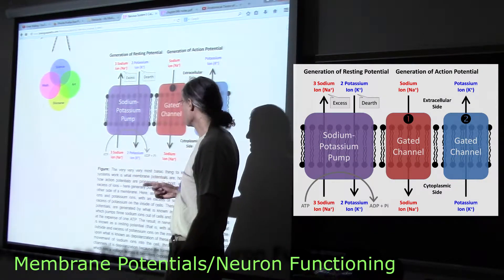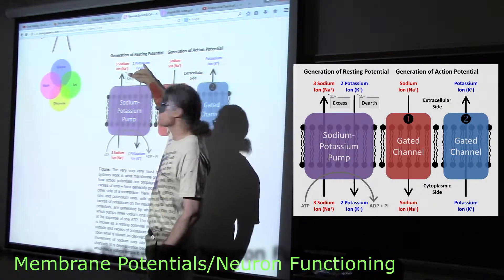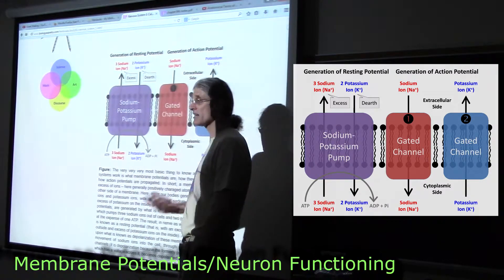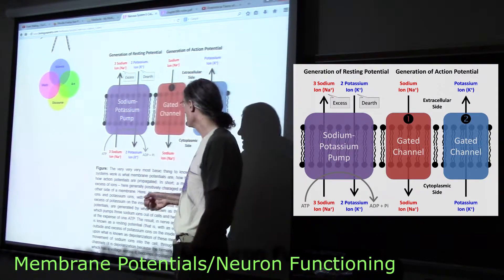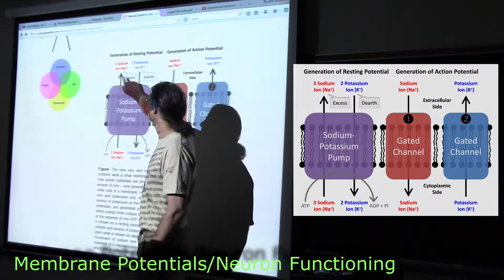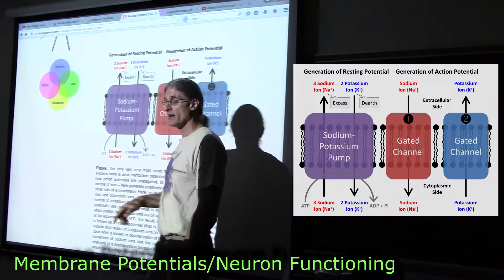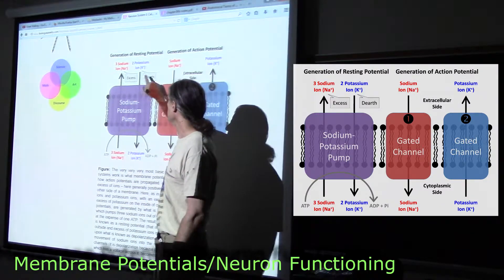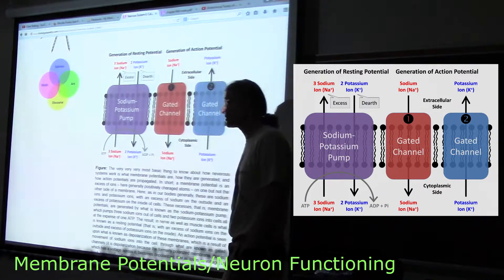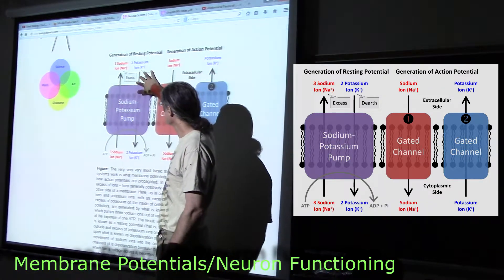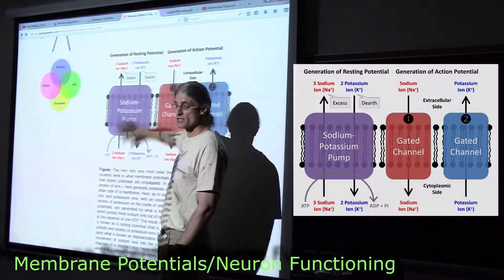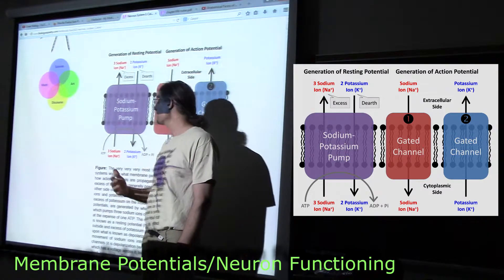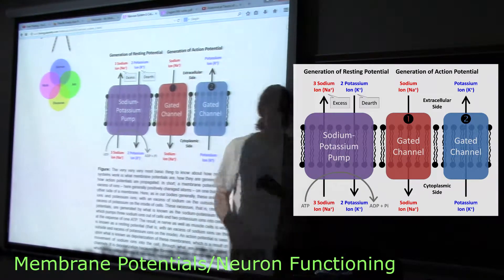In the course of this, sodium ions are pumped out of the cell and potassium ions are pumped into the cell — pumped against their concentration gradient. You end up with way more sodium ions on the outside in excess and way more potassium ions on the inside, so there's a relative lack of potassium on the outside. You're pumping these ions from a region of lower concentration to a region of higher concentration in both cases, ending up with lots of potassium on the inside and lots of sodium on the outside.